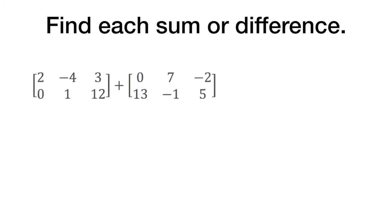Let's start with this. So what we do is we find the equivalent part. So 2 will go with 0, negative 4 with 7, 3 with negative 2, and so on and so forth. So 2 plus 0 is 2, negative 4 plus 7 is 3, 3 minus 2 is 1, 0 plus 13 on our next row is going to be 13, 1 plus negative 1 is 0, and 12 plus 5 is 17.